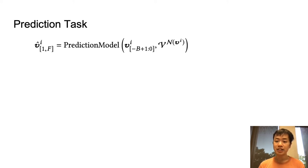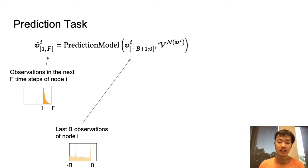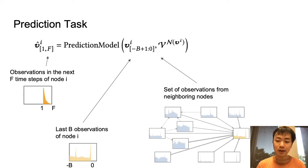Okay, so let's make the prediction task a bit more precise. When we make predictions on node i, the output of the model are the observations in future timesteps of this node. And to make these predictions, we will feed two sets of input into the model. The first set of inputs are the historical observations of node i. And the second set of inputs are the observations from the neighbors of node i.